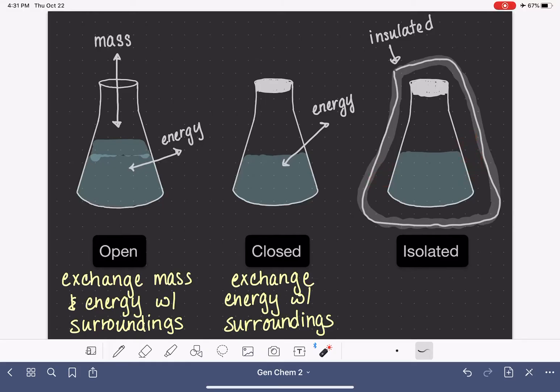If we were to put some sort of Bunsen burner underneath this, the heat from that Bunsen burner would not be able to make its way through the insulation and get into the system. So an isolated system is one that cannot exchange anything with the surroundings.